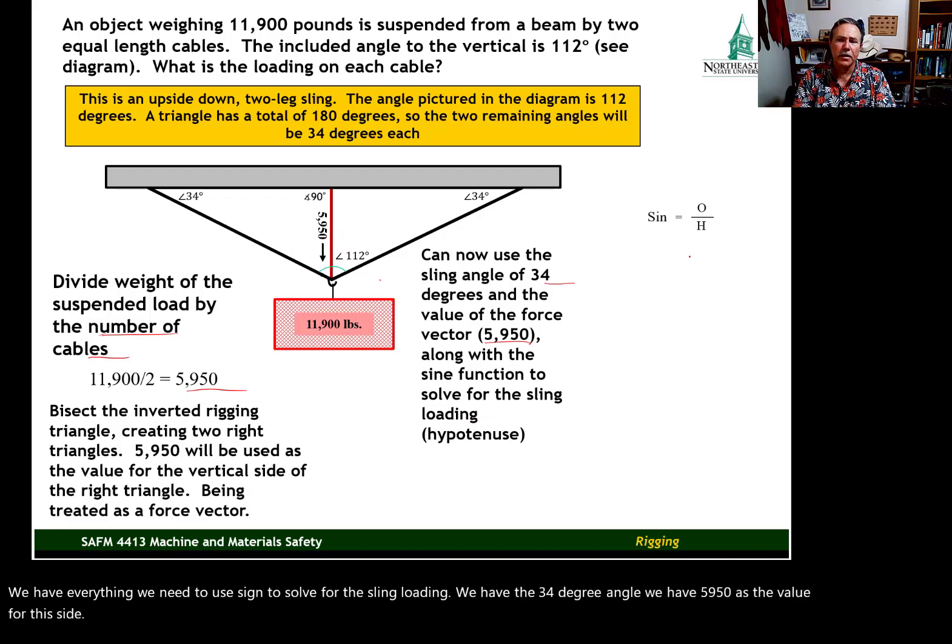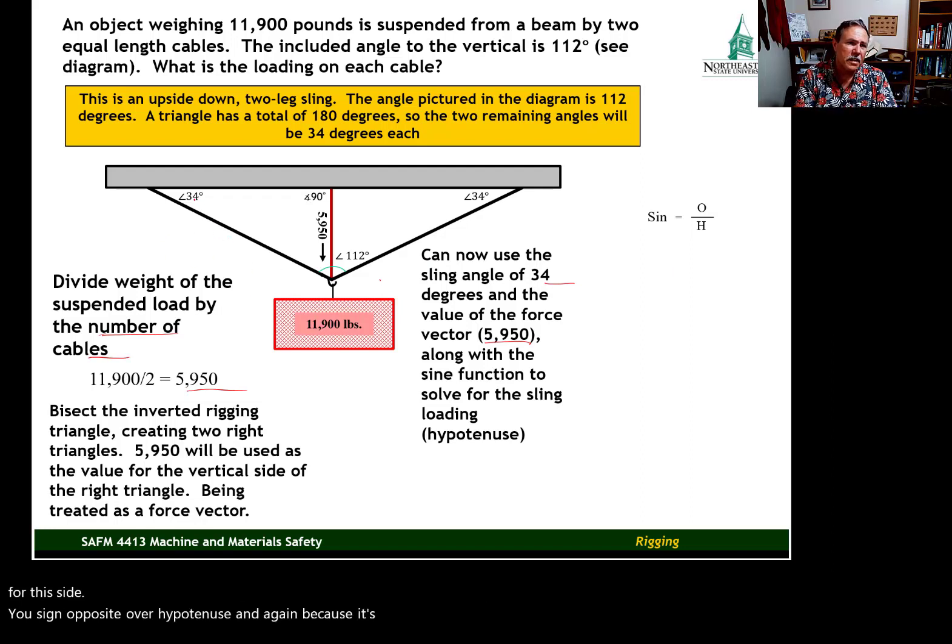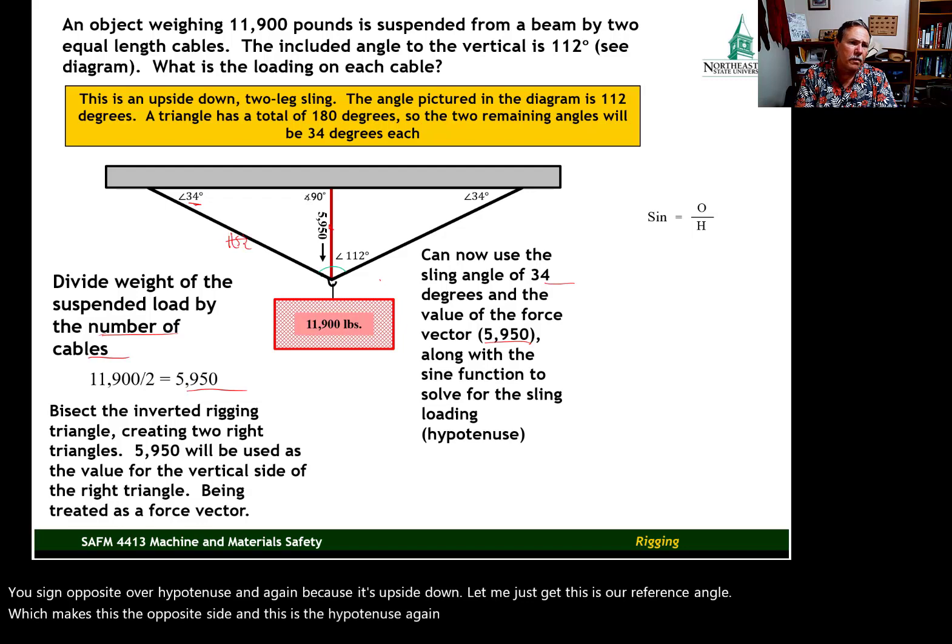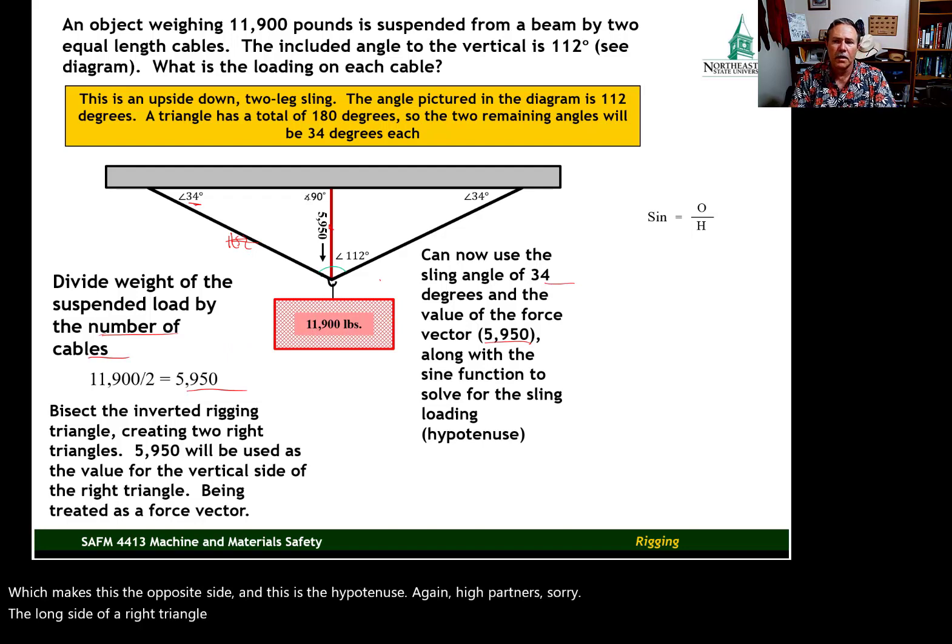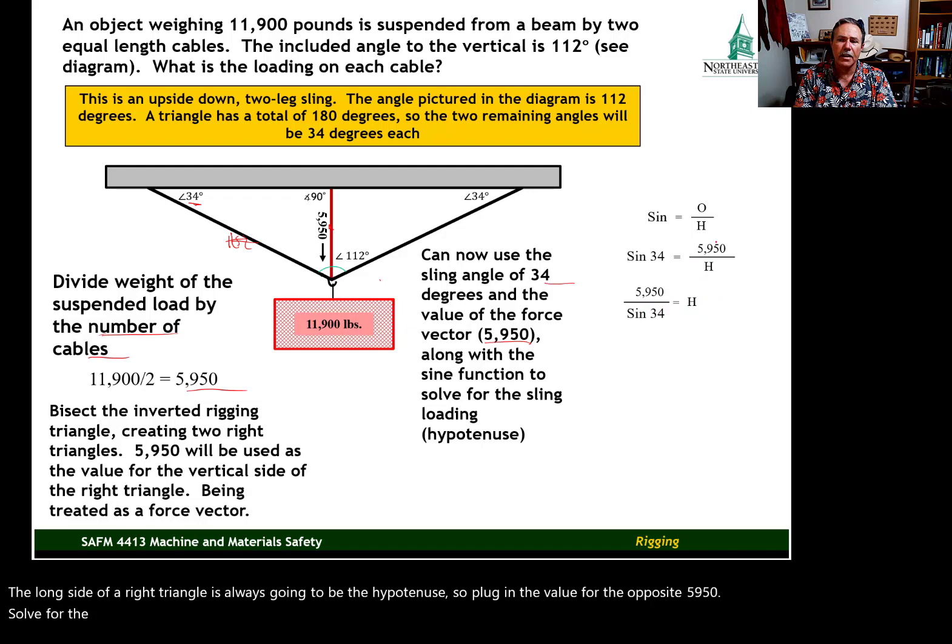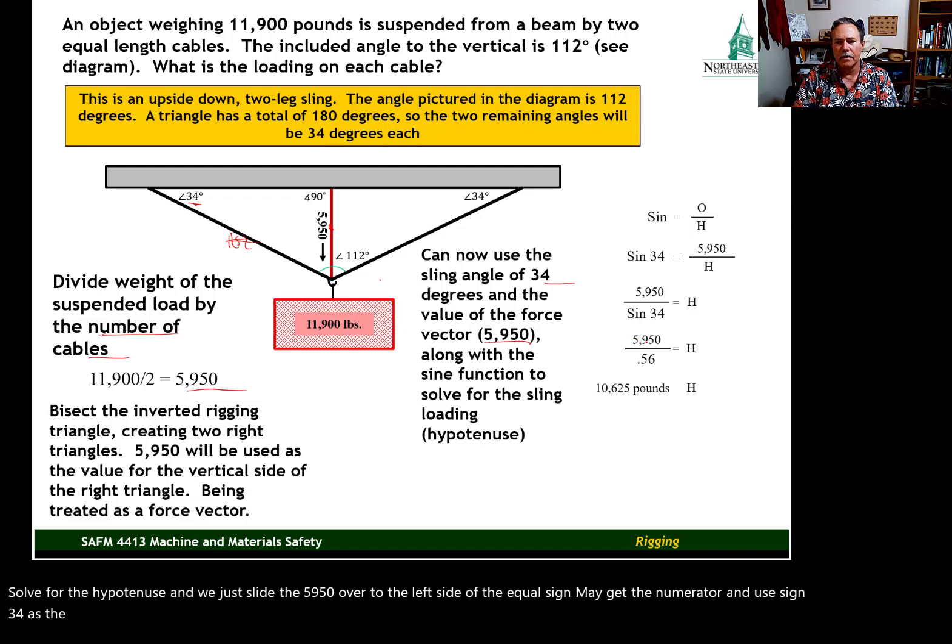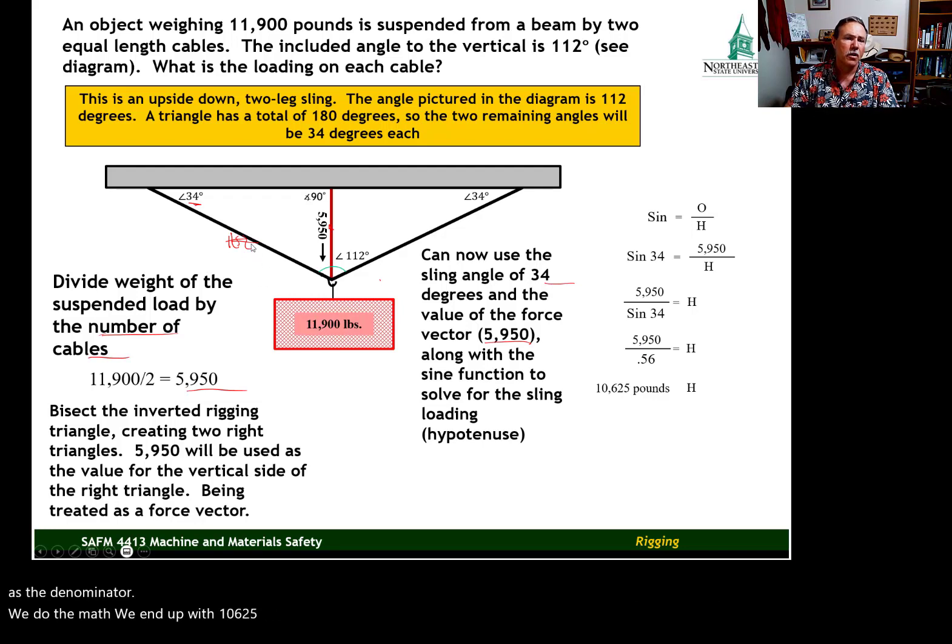Use sine, opposite over hypotenuse. And because it's upside down, this is our reference angle, which makes this the opposite side, and this is the hypotenuse. The long side of a right triangle is always going to be the hypotenuse. Plug in the value for the opposite, 5,950. Solve for the hypotenuse. And we just slide the 5,950 over to the left side of the equal sign, make it the numerator, and use sine 34 as the denominator. We do the math, we end up with 10,625 pounds as the sling loading on each leg of this two-leg cable assembly.